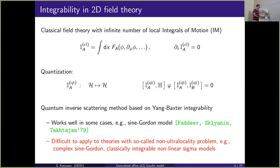In integrability, we require the stronger condition that these operators mutually commute amongst themselves. There is a method for constructing these local integrals of motion known as the quantum inverse scattering method, based on the famous works of Baxter and others in the 80s on two-dimensional statistical lattice systems. It works well for some cases such as the sine-Gordon model.